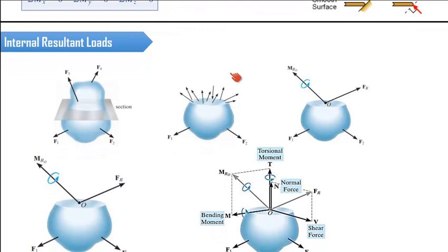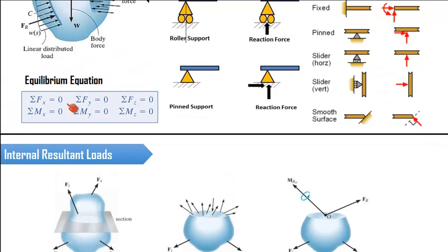Moving forward to the internal resultant load — we discussed various loads acting on the surface of the body, but now the question is what happens inside the body. If we consider a cross section, a lot of forces act in different directions. Using the fundamental mechanics principle of equilibrium, the net force in the x, y, and z directions must all be zero for the body to be in equilibrium. All these equations must be satisfied to state that the body is in static equilibrium.